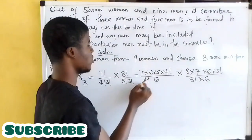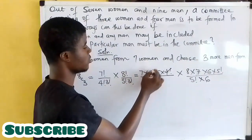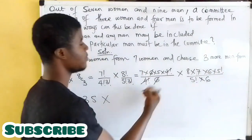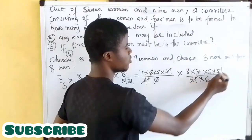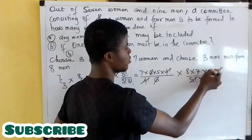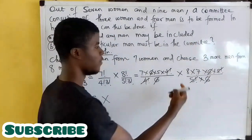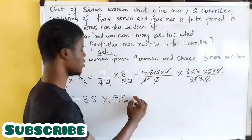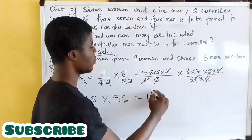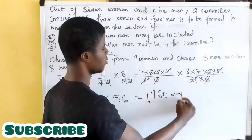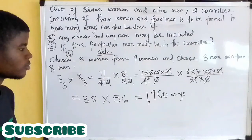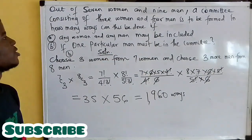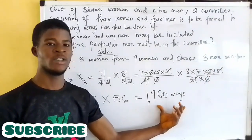Four factorial cancels four factorial, six cancels six. Eight times seven is 56. So we have 35 times 56 ways, which gives us 1,960 ways of selection. If one particular man must be in the committee, it can be done in 1,960 ways.